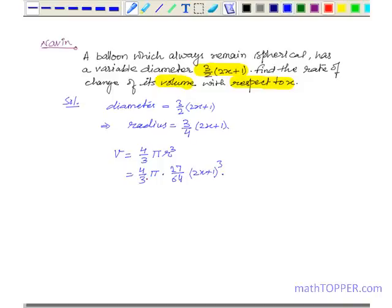To simplify this, we can cancel 3 and 27, and similarly 4 and 64. We get V = 9π/16 times (2x + 1)³.